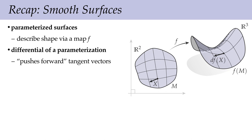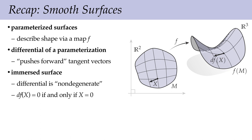Why do we want to talk about the differential? One very good reason is it lets us talk about what it means for a surface to be nice. When we talked about curves in the plane, we said a curve is nice — regular — if its derivative never goes to zero. The idea of an immersed surface captures that same idea for surfaces. We say a surface is immersed if its differential is non-degenerate: df of x equals zero if and only if x equals zero. Vectors that have some non-zero length get stretched out in some way but don't get squashed all the way down to zero.